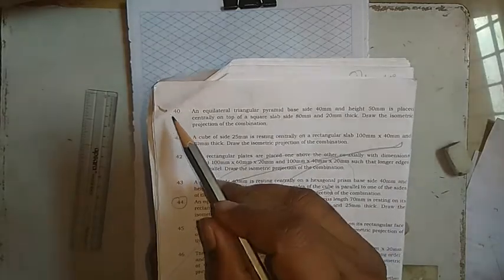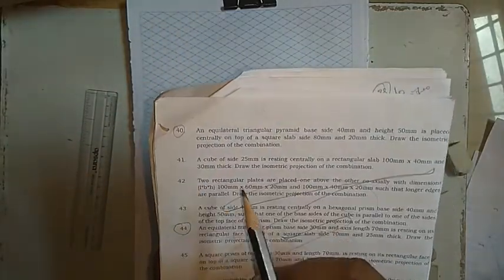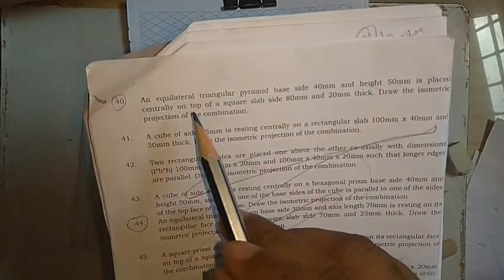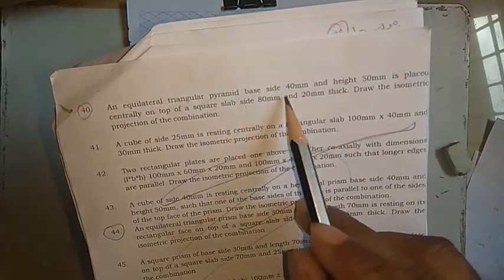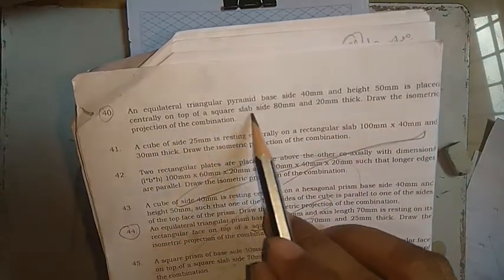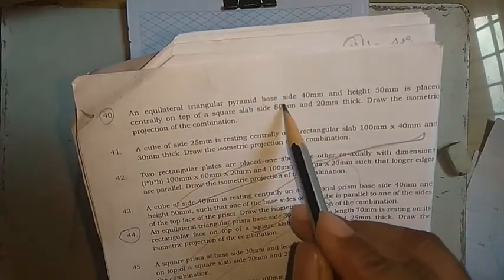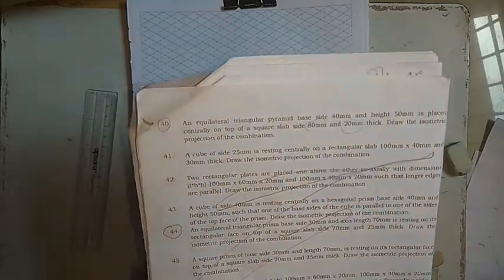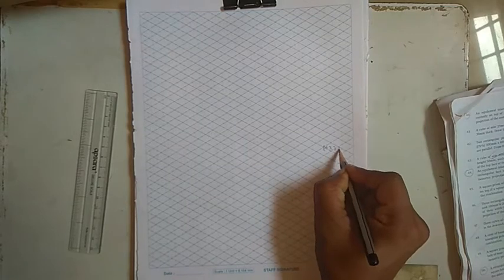Hello friends, so here we have an isometric projection, problem number 40, where an equilateral triangular pyramid, base 40 and height 50, is placed centrally on top of a square slab 80 by 20. So we have a square slab 80 by 20, and above that one there is an equilateral pyramid of 40 by 50.